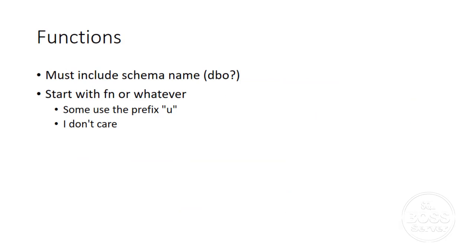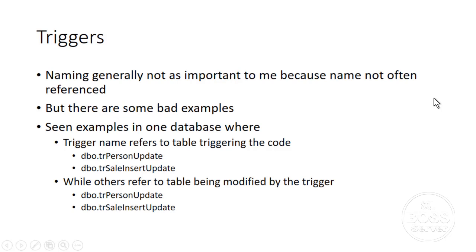Functions must include the schema name when you refer to them — usually that's DBO. Giving schema names to functions is also helpful. Typically a function starts with FN or something similar; some people use the letter U. Some consistency is nice. Trigger names don't mean much to me — I very seldom refer to them except to enable or disable them. The inconsistency in trigger naming is what's awful, and I believe that should be strongly avoided, though I care less about this than other things.